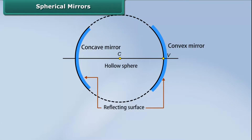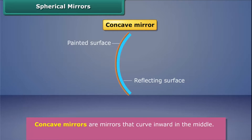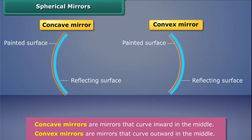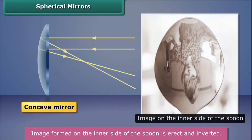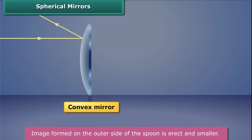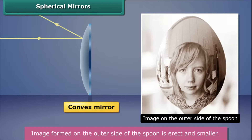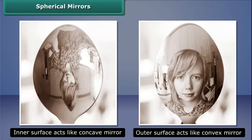Spherical mirrors have curved reflecting surfaces and are also called curved mirrors. There are two kinds of spherical mirrors: concave mirror and convex mirror. Concave mirrors curve inward in the middle, whereas convex mirrors curve outward in the middle. Concave mirrors reflect light from their inner surface, like the inside of a spoon. Convex mirrors reflect light from their outer surface, like the outside of a spoon. Hence, the inner surface of a spoon acts like a concave mirror, while its outer surface acts like a convex mirror.